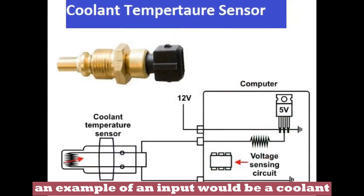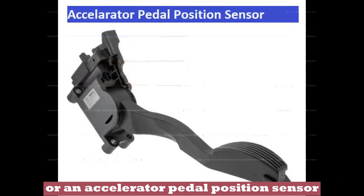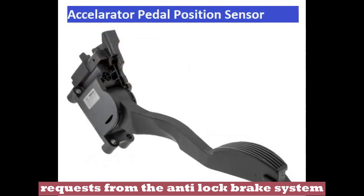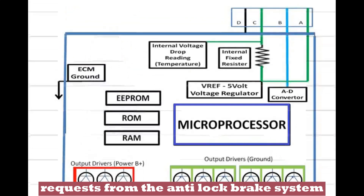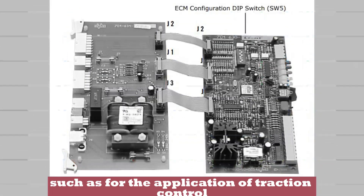An example of an input would be a coolant temperature sensor or an accelerator pedal position sensor. Requests from the anti-lock brake system, ABS, module may also be considered, such as for the application of traction control.